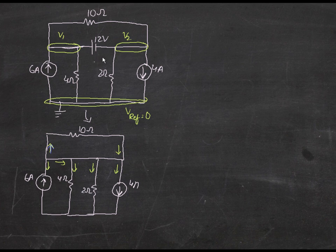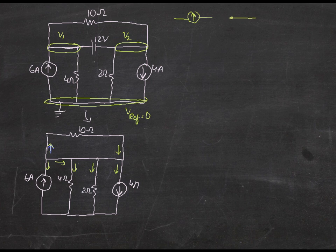The first step in supernode analysis — just like in supermesh, where a current source interfering with the calculation is handled by open-circuiting it — in this case, to remove the voltage source you just make a short circuit. You put a wire instead of that voltage source. Just to clarify: to remove a current source you make it an open circuit, and when it's a voltage source you make it a short circuit.